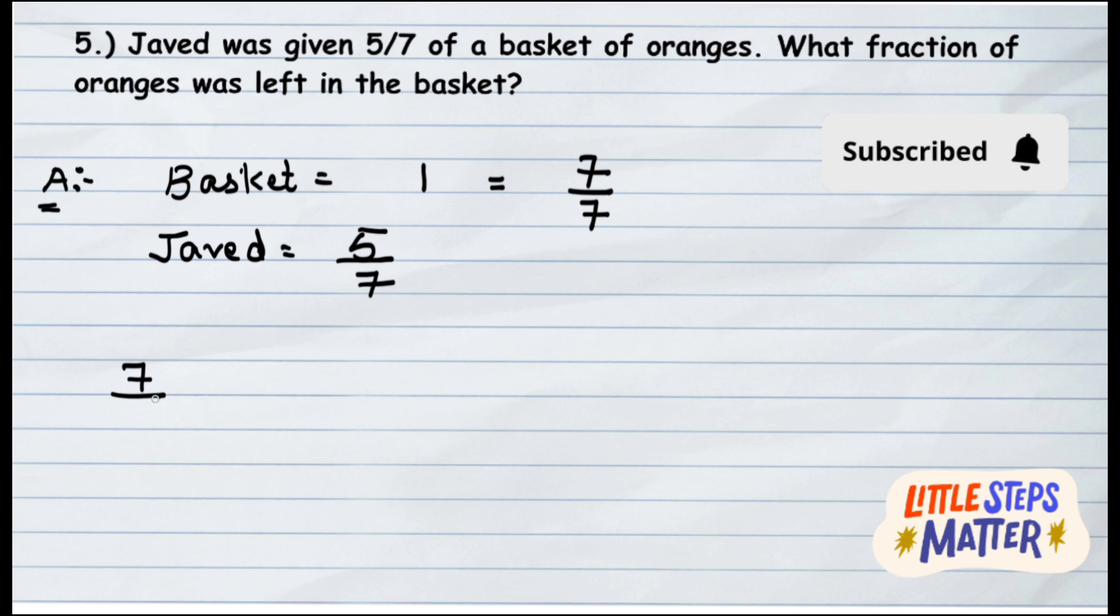What you observe, denominators are same, so simply go and subtract the numerators. So when you do 7 minus 5, it gives you 2 upon 7. So how much fraction of oranges were left? 2 upon 7.